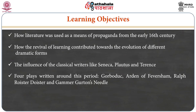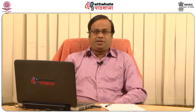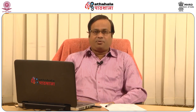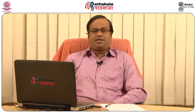In this module, we are going to learn certain things. Number one, we are to learn the trajectory of English drama during that time. Then, the influence of the classical writers like Seneca, Plautus, and Terence. We are also going to learn plays written around that time like Gorboduc, Gammer Gurton's Needle, and Ralph Roister Doister. We will discuss at length the first English tragedy, Gorboduc, and also discuss the features of the Senecan model of tragedy during that time.